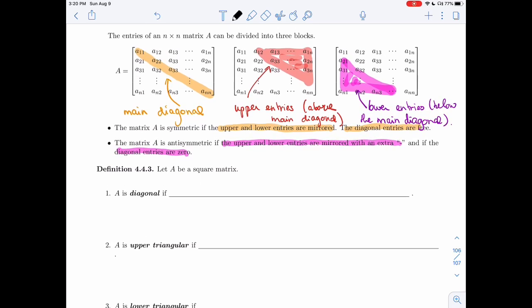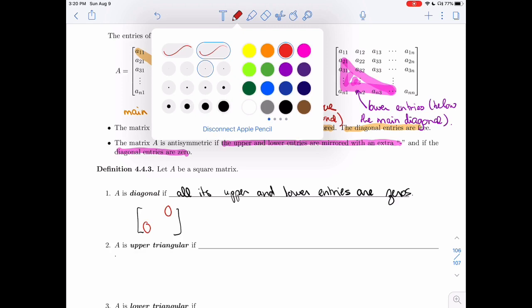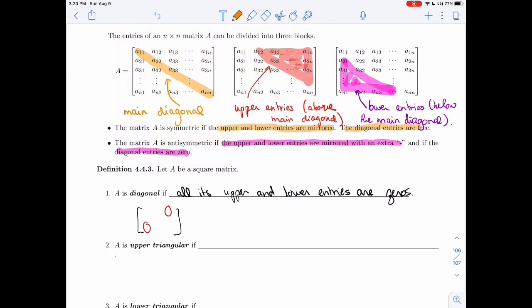If I have a square matrix, A is diagonal if all its upper and lower entries are 0. So that means that if you look at the matrix, you're going to have 0s above, 0s below, and then the diagonal could be whatever you want, including 0. So these are free.